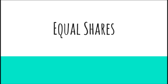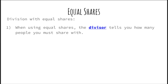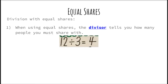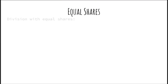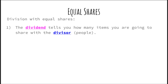Equal shares. Division with equal shares. When using equal shares, the divisor tells you how many people you must share with. Same problem: 12 divided by 3 equals 4. 3 is your divisor, and you are sharing it with 3 people — represented by 3 smiley faces.